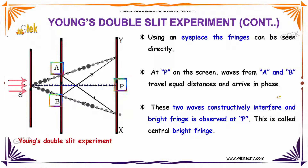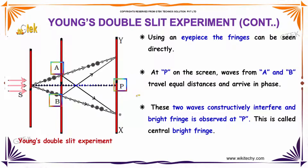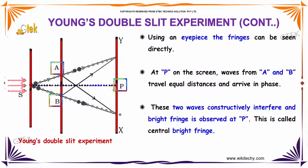Usually, in an eyepiece, the fringes can be seen directly. At point P on the screen, waves from A and B travel equal distances and arrive in phase. These two waves constructively interfere and a bright fringe is observed at P due to constructive interference. This is called the central bright fringe.